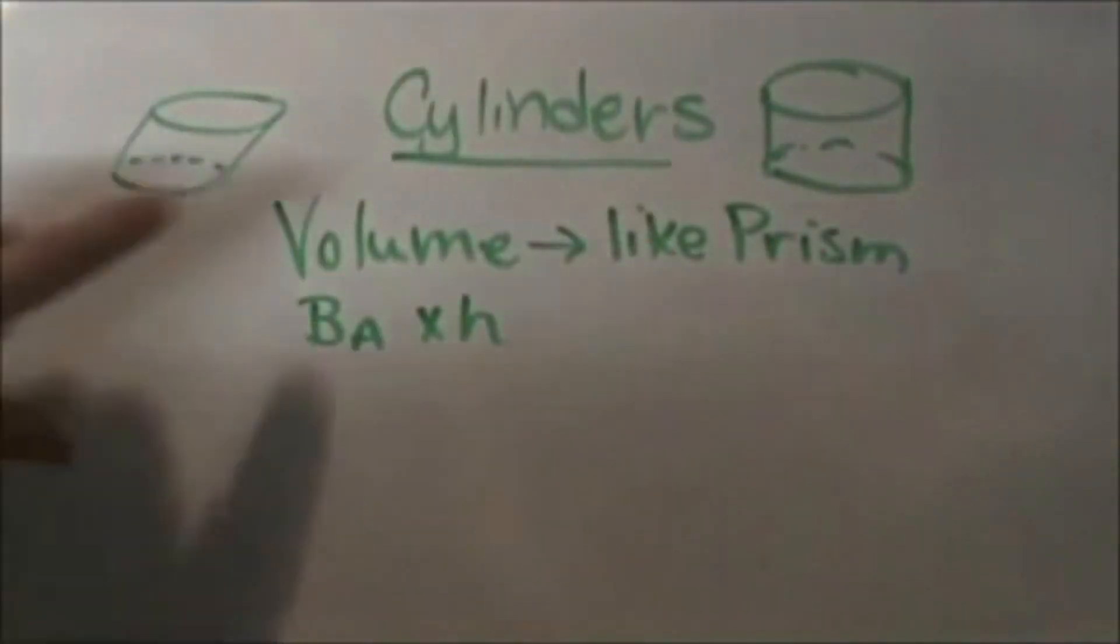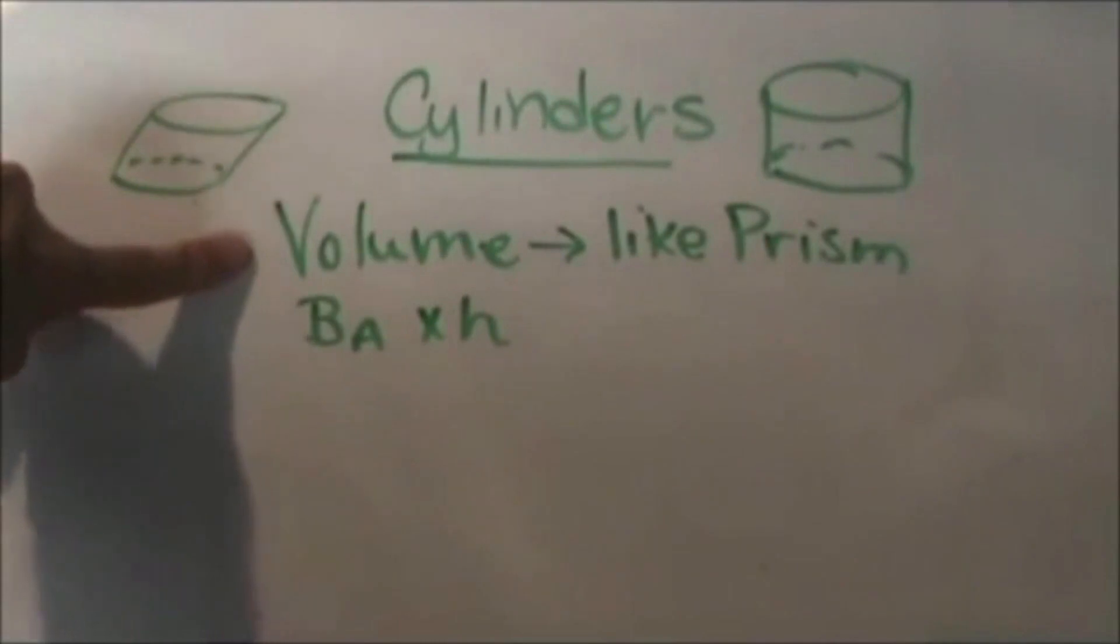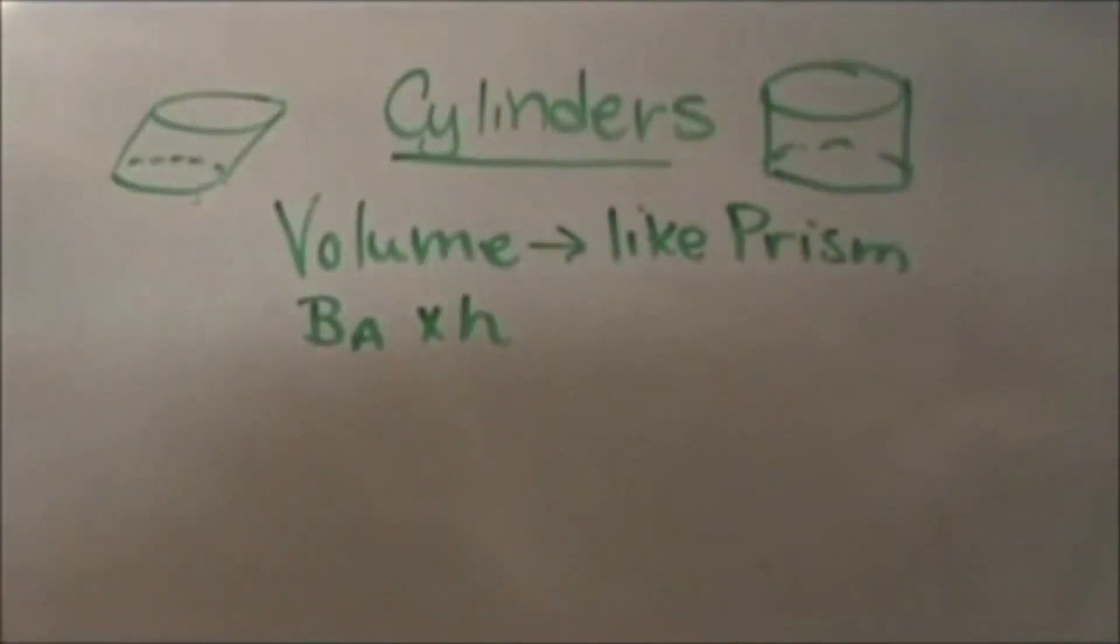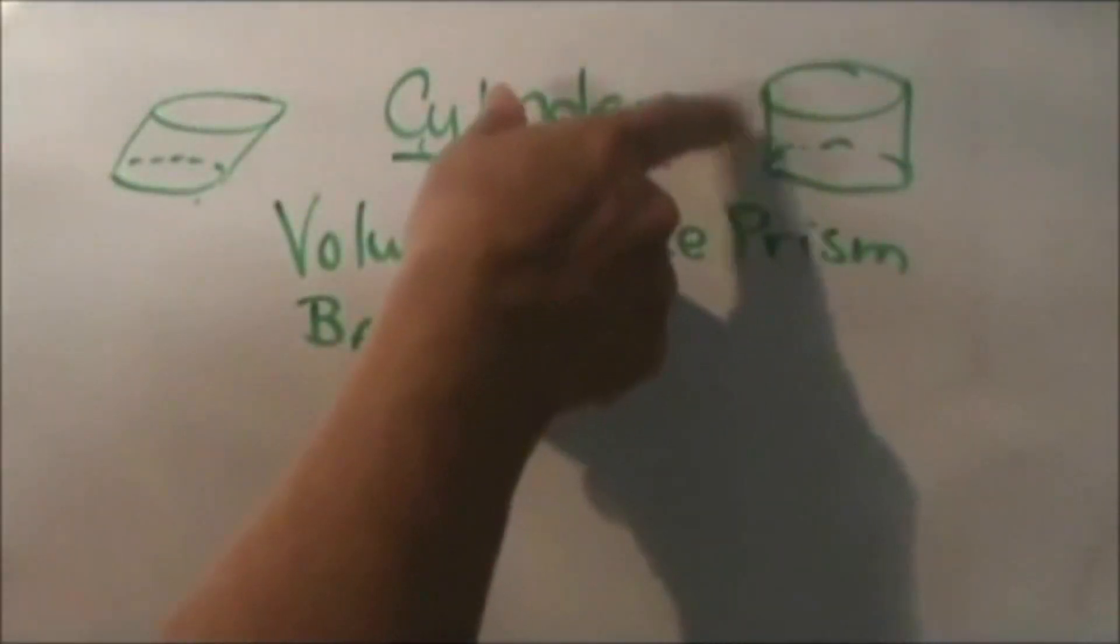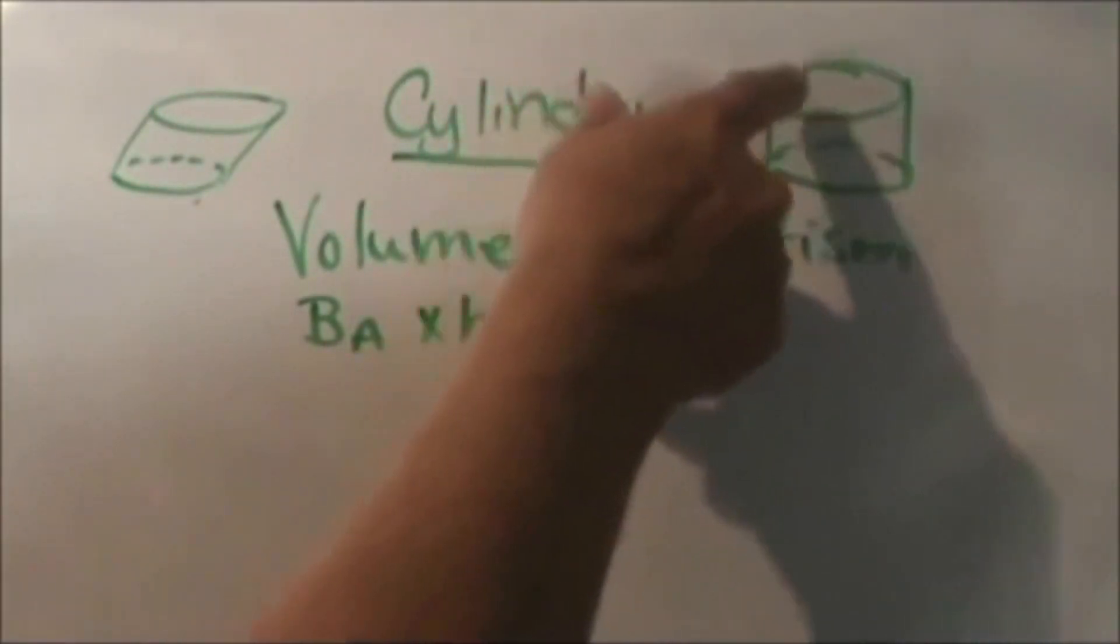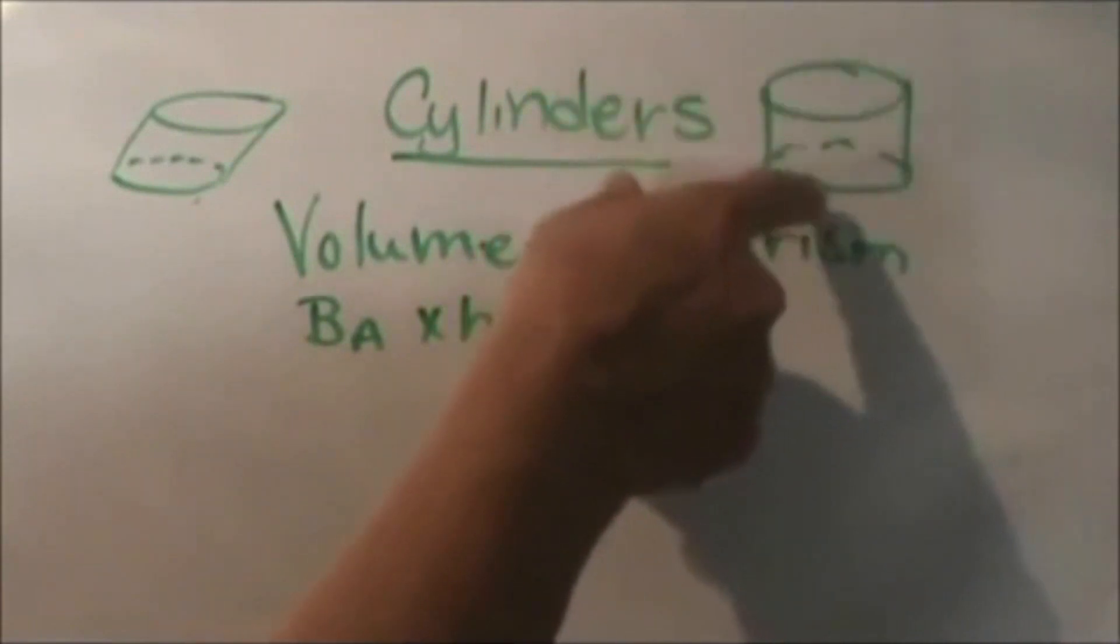Today we're going to look at cylinders and how to find the volume of a cylinder. We have two different types of cylinders. Your standard cylinder is defined as a three-dimensional figure where you have two circular bases.